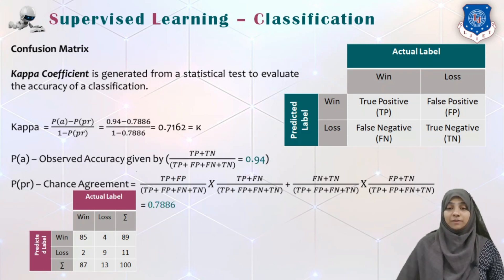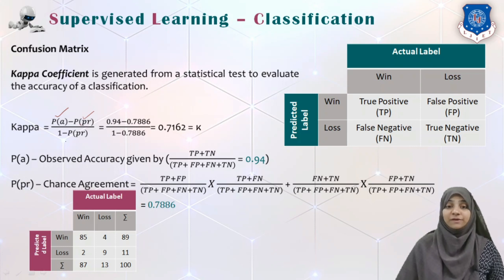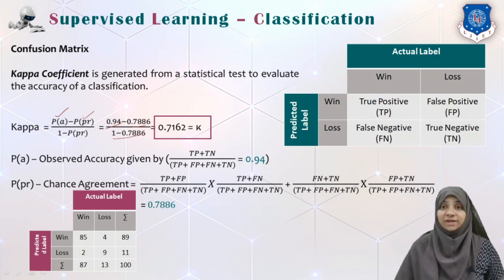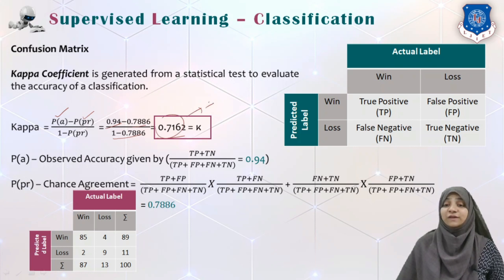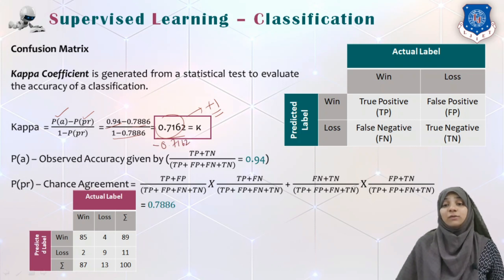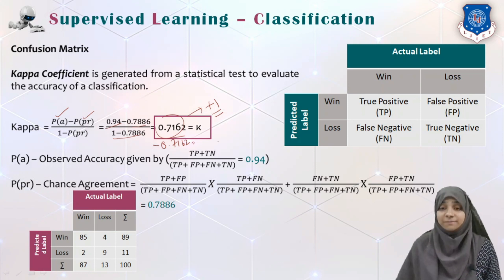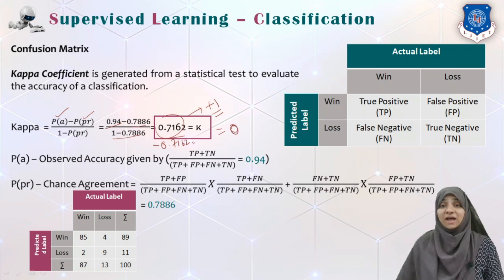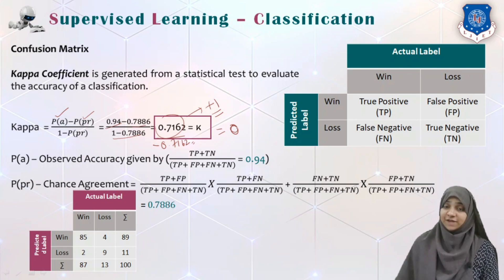Substituting the values into the formula: kappa = (0.94 - 0.7886) / (1 - 0.7886) = 0.7162. Since this value is close to positive 1, the classifier is performing much better than random classification. If the value were negative, the classifier would be performing worse than random. If the value were 0, even though accuracy appears good, the classifier would be performing similarly to a random classifier.